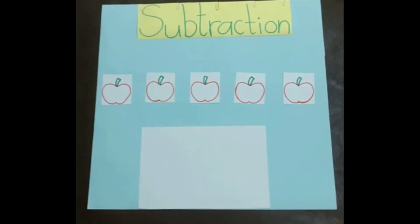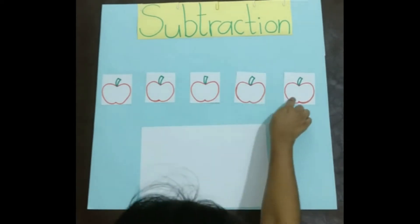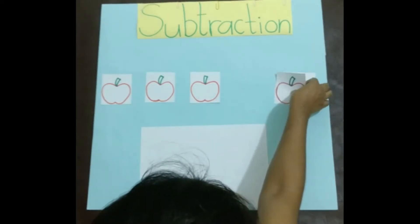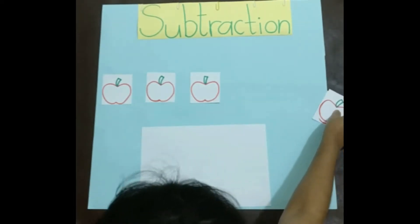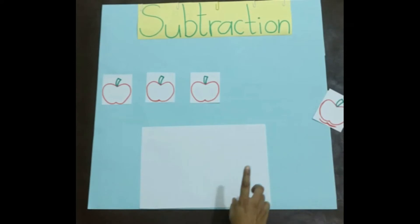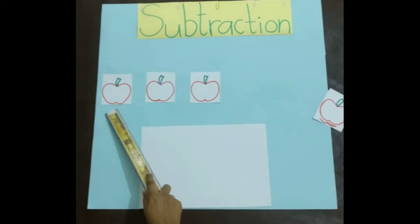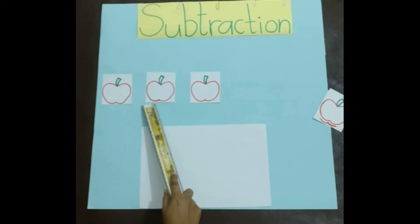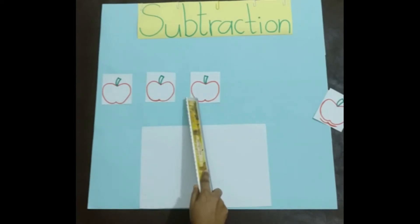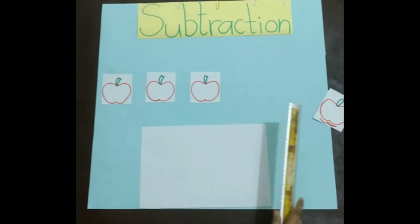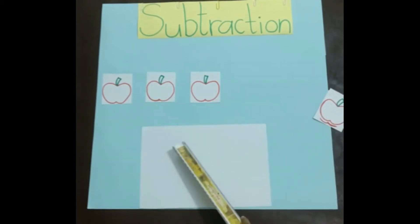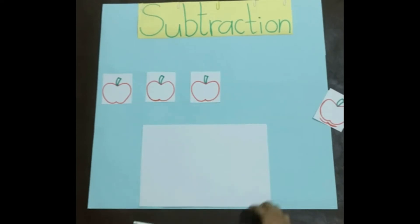You give two apples to your friend — one, two. Give two apples to your friend. Then how many apples are you remaining with? We will count it: one, two, three. You have now three apples. We will see this example once again.